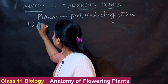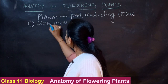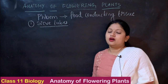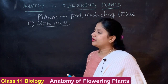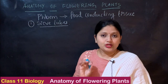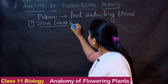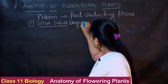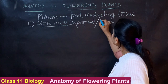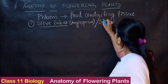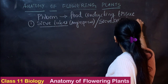The first element is the sieve tubes. You have to remember this important point: we call them sieve tubes only in case of angiosperms. Whereas in case of gymnosperms, they are called as sieve cells.